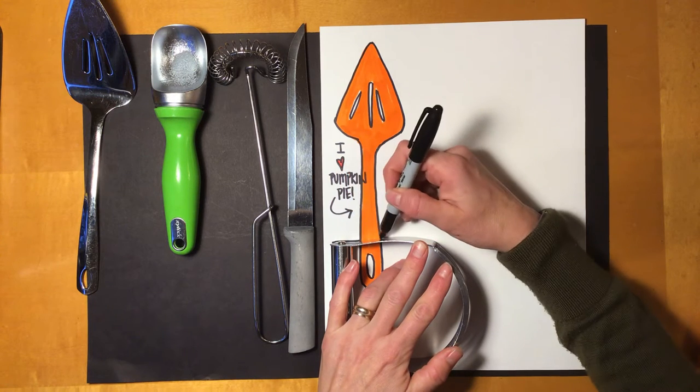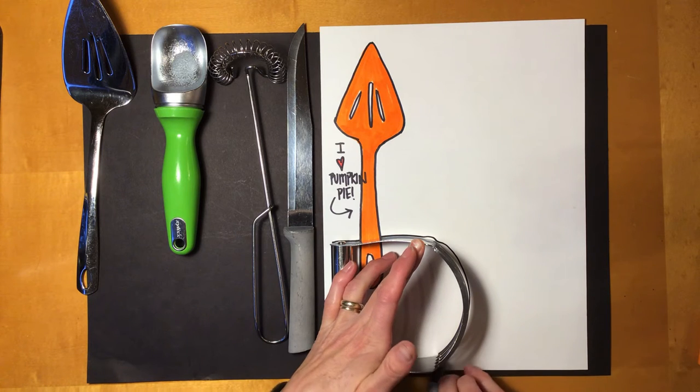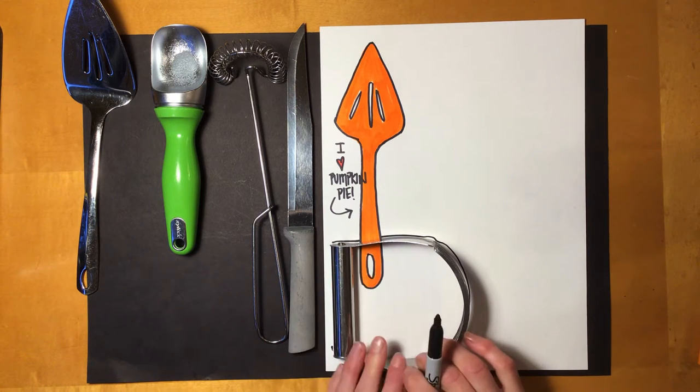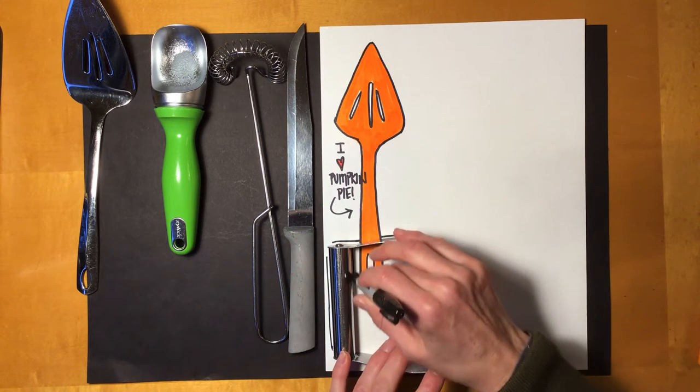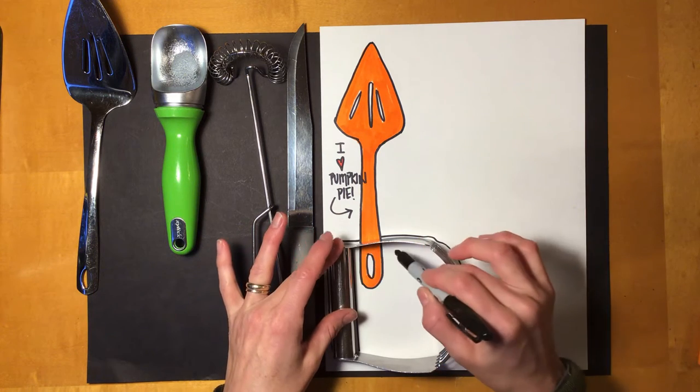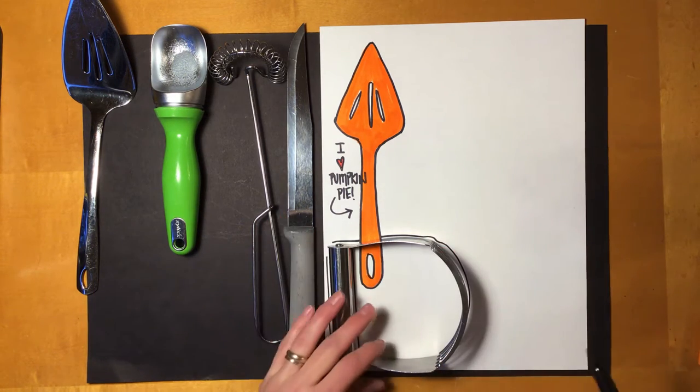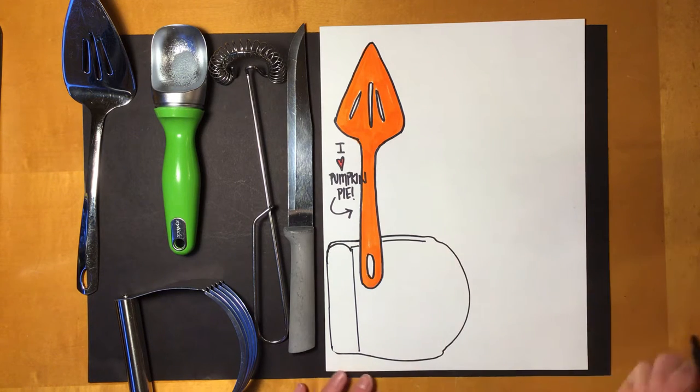One of the things you can do is you can outline or trace around your object when it is something that's an interesting shape, and that can help you with drawing and with your placement. So I'm going to go ahead and do that. All right, I'll take that off now and draw the inside pieces that I see.